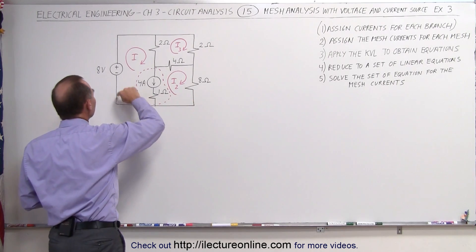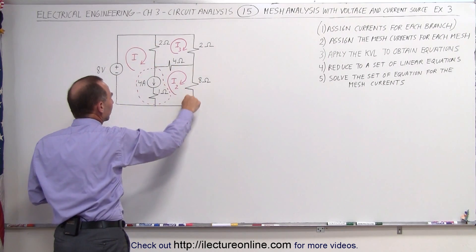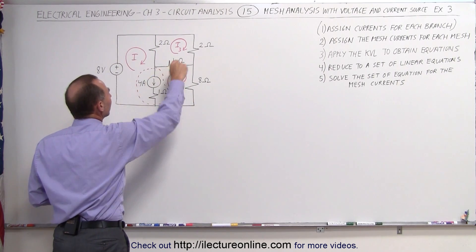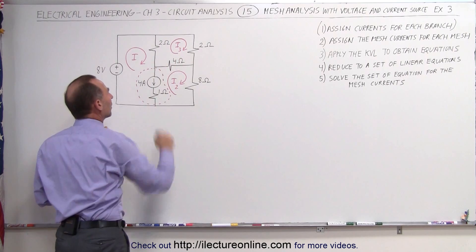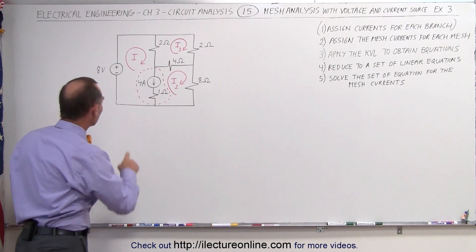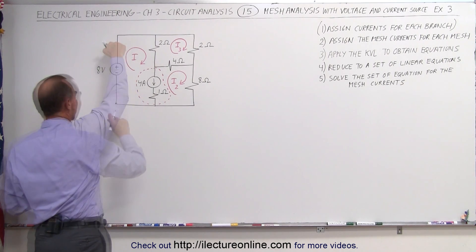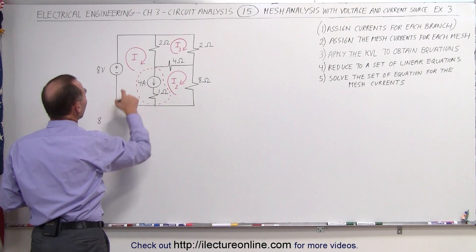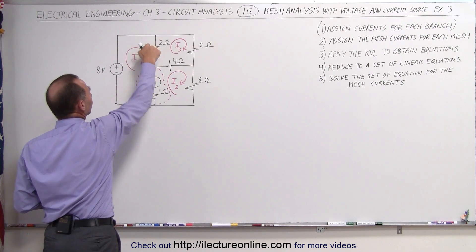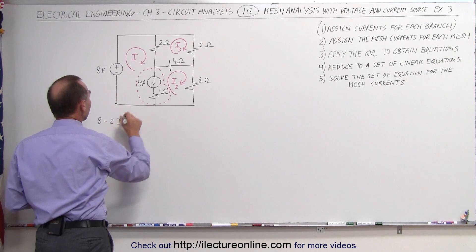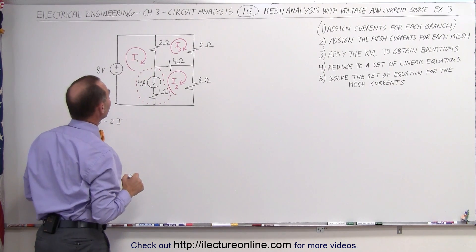The first equation is going to be obtained by going around this loop right here, which is a mesh that has both current I1 and I2 in it, and then we have a second loop coming from that mesh right there, I3. Starting at this corner right here, lower left corner, going across the voltage source, 8, then coming around here we have a voltage drop across this resistor, minus 2I1.